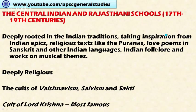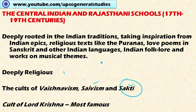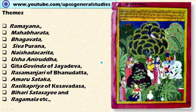These paintings are deeply religious. In our last video about Mughal painting, we learned that Mughal paintings were deeply secular and aristocratic, but here it is different — they are deeply religious, related to gods and their stories. The important themes include the cult of Vaishnavism, Jainism, Shaivism, and Shakti. The cult of Lord Krishna is the most famous and most frequently depicted across various schools of Rajasthani painting. Important themes include Ramayana, Mahabharata, Bhagavad Gita, Bhagavata Purana, and Shiva Purana.